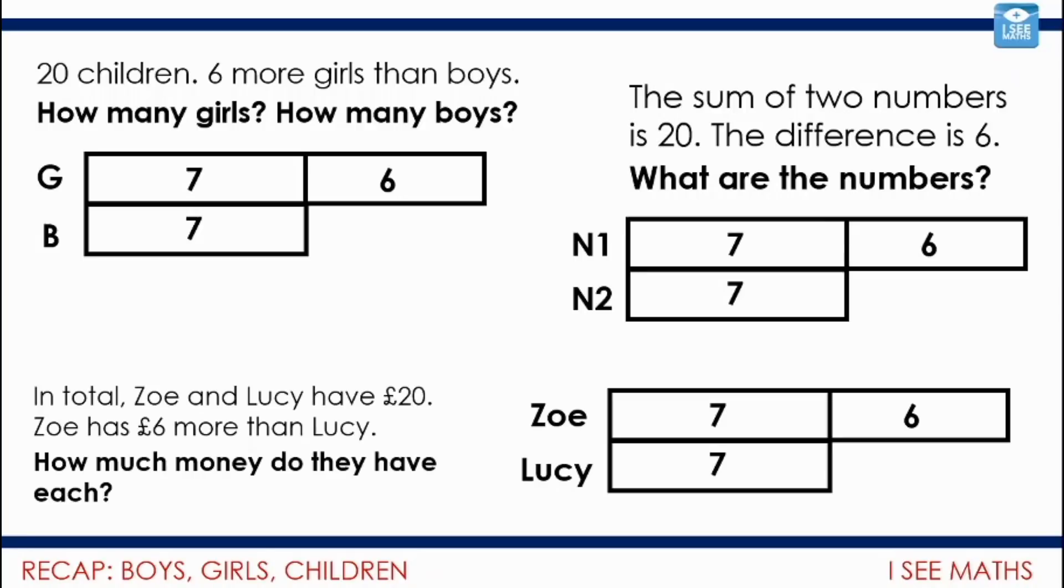Have a look at this. In total Zoe and Lucy have 20 pounds. Zoe has 6 pounds more than Lucy. Again a different context but again exactly the same picture that matches to it.